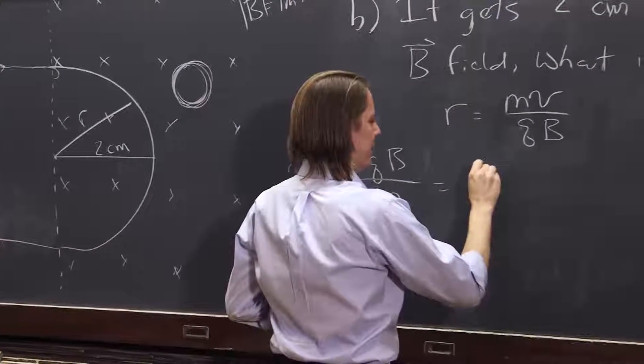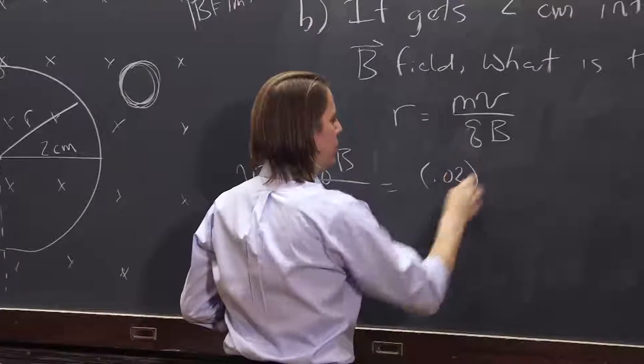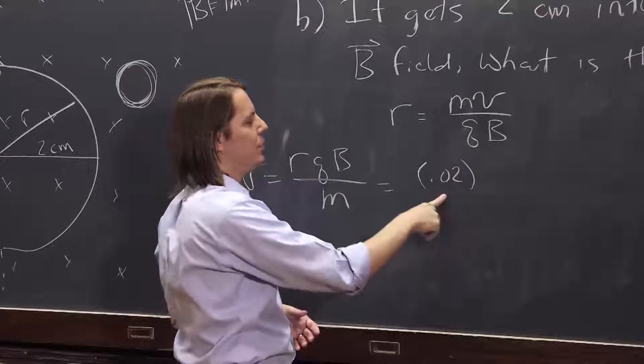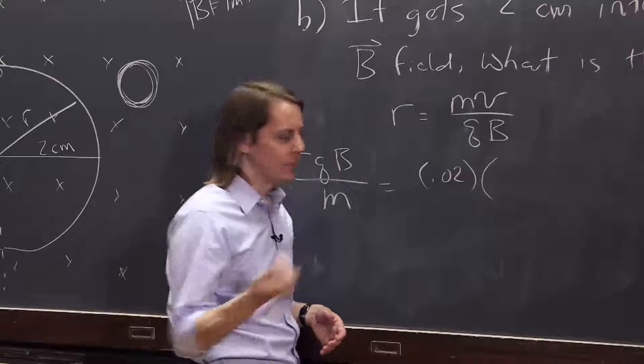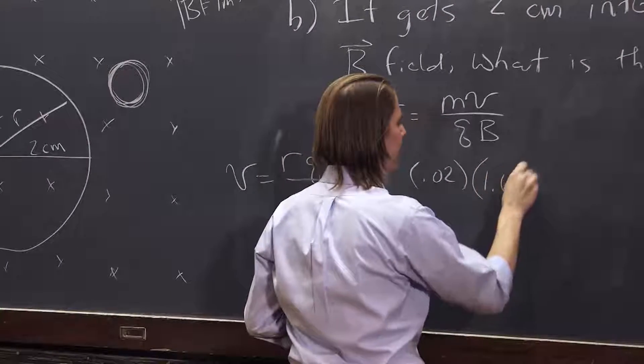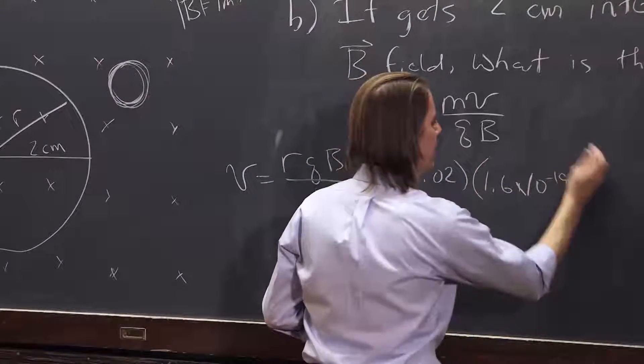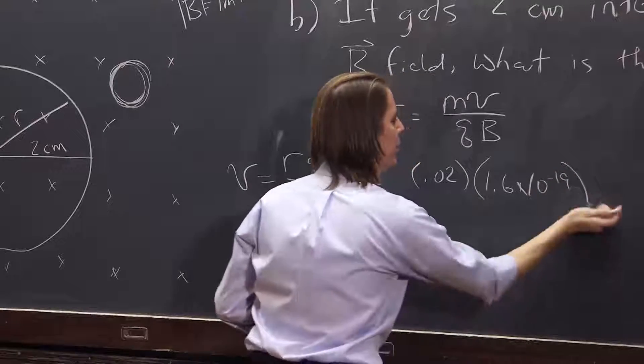So r, I'll just write 0.02, I'm going to do this all MKS units, 0.02 meters. q, the charge, charge of an electron, 1.6 times 10 to the minus 19 coulombs, I'm doing all MKS units.